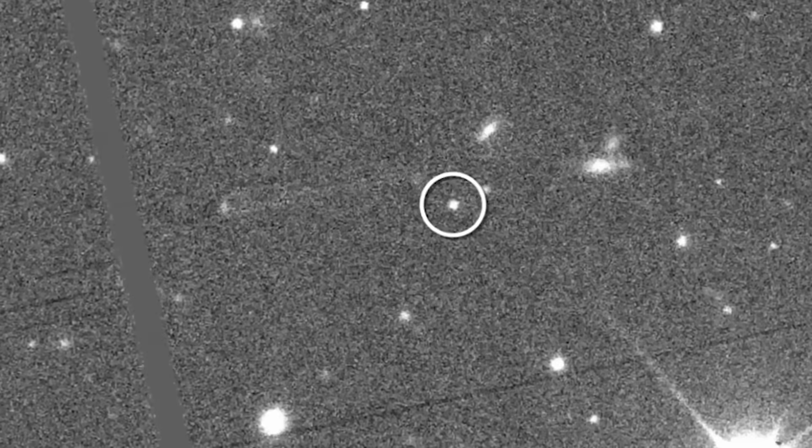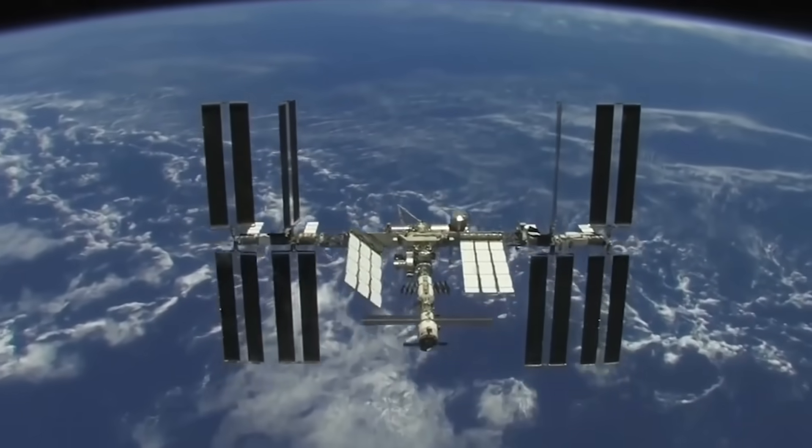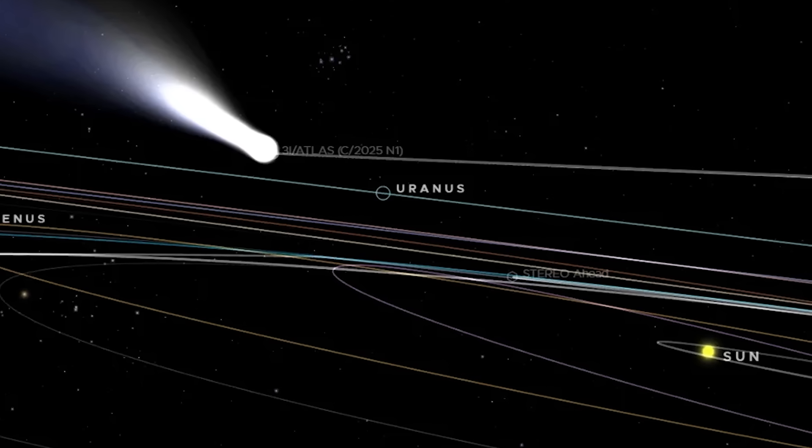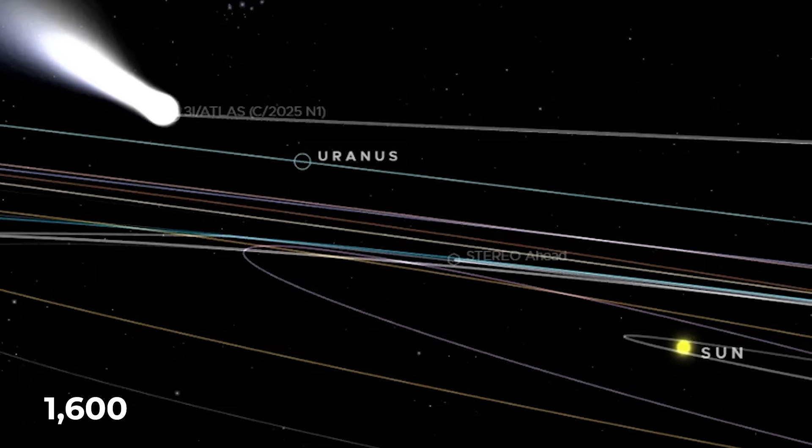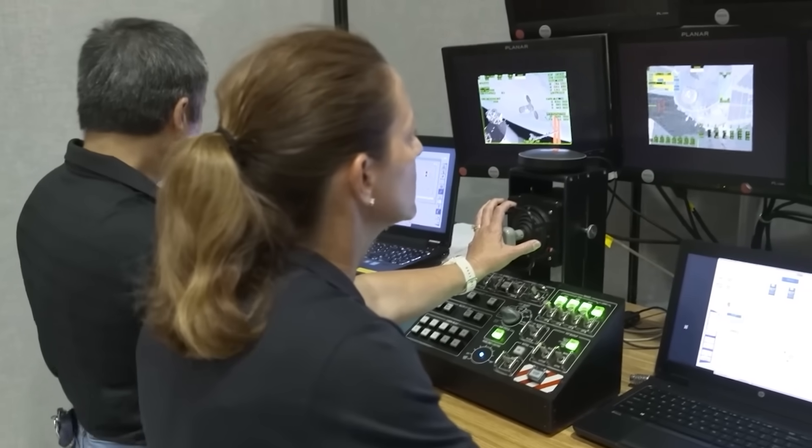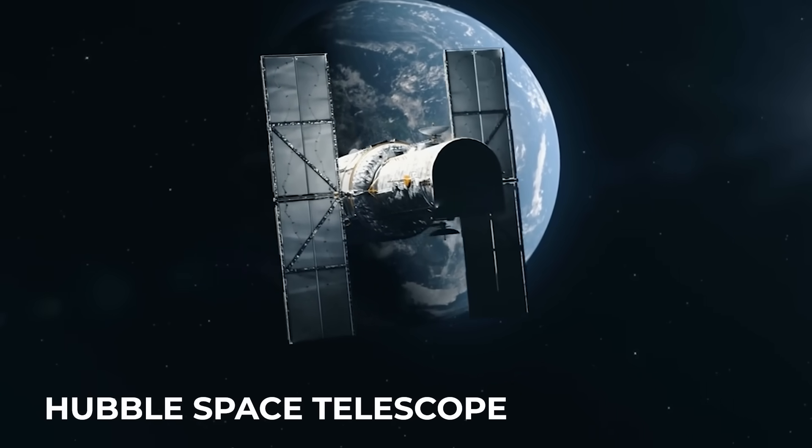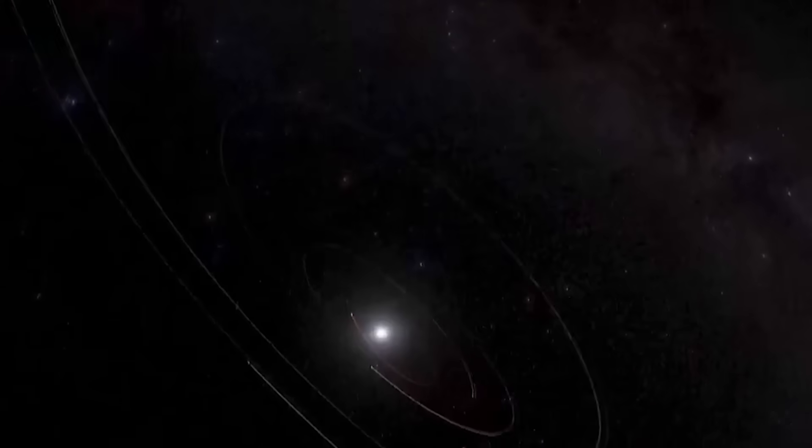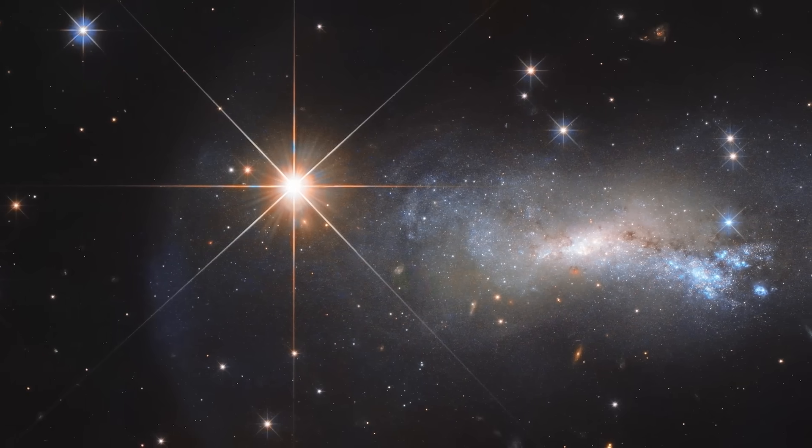If 3i/Atlas is assumed to be a comet, a contradiction appears. The observed jets imply a massive loss of material, 5 billion tons per month. For that to occur, the object would need more than 1,600 square kilometers of surface exposed to the Sun, equivalent to a diameter of around 23 kilometers. But Hubble images show its true diameter is no more than 5.6 kilometers. The area required to explain the jets is 16 times larger than the actual surface. How can that be?